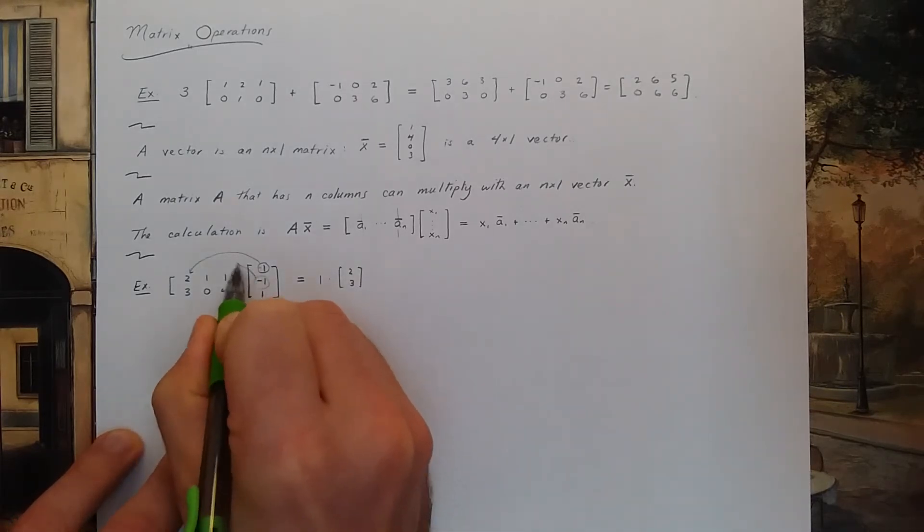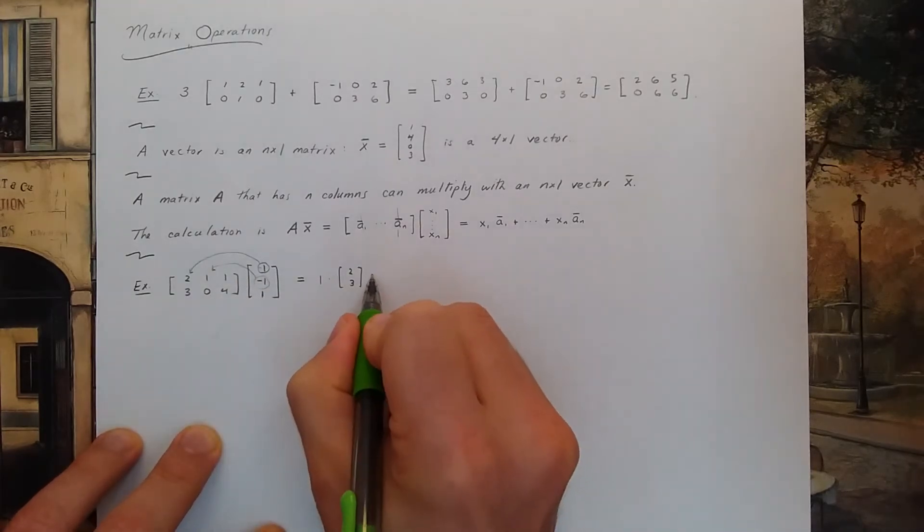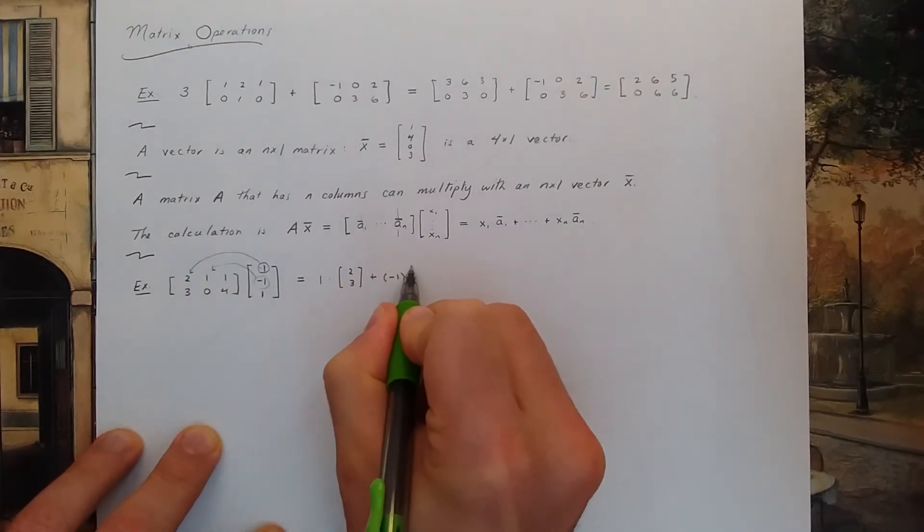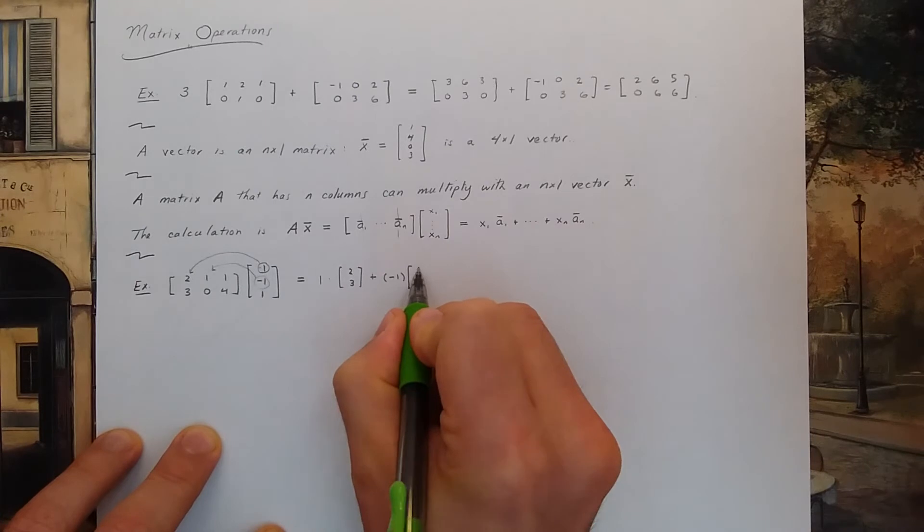And I take the second negative 1 and I'm going to multiply that times the second column. So I get plus negative 1 times 1, 0.